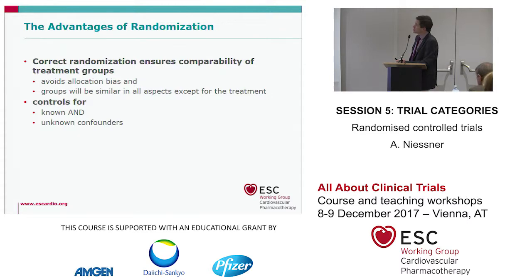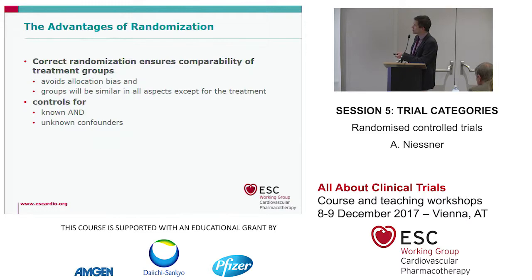The advantages of randomization: if you have correct randomization, it ensures comparability of treatment groups, it avoids allocation bias, and groups will be similar in all aspects except for the treatment. So it controls for both known and unknown confounders.